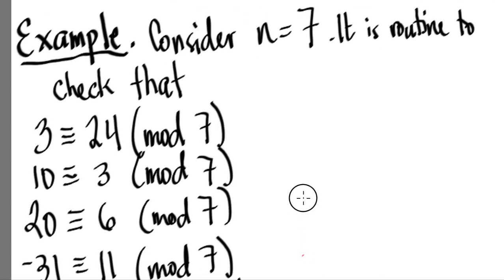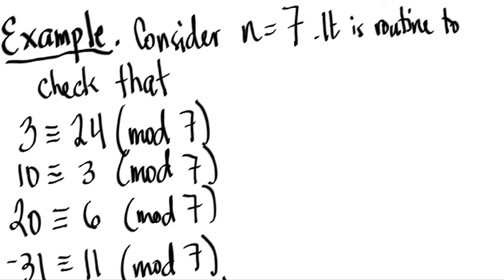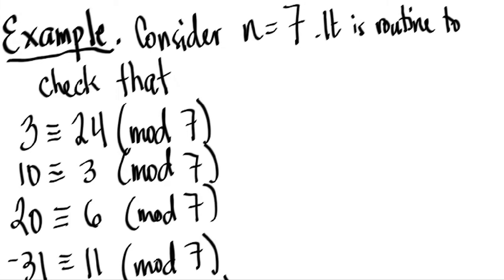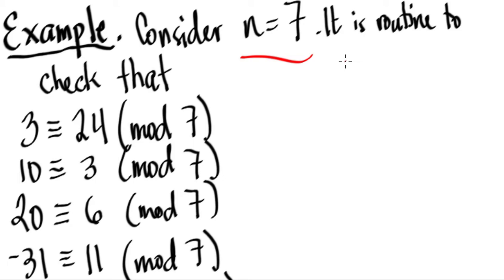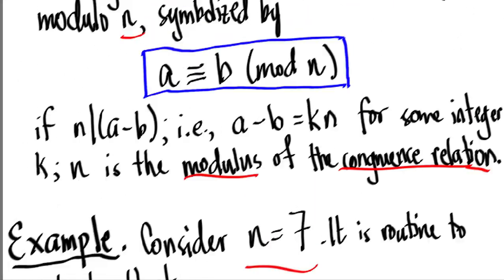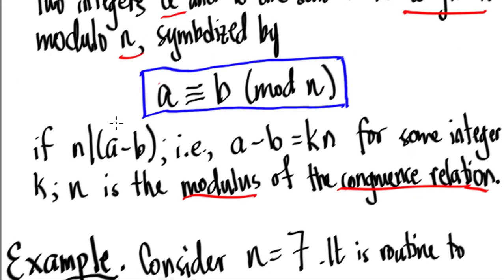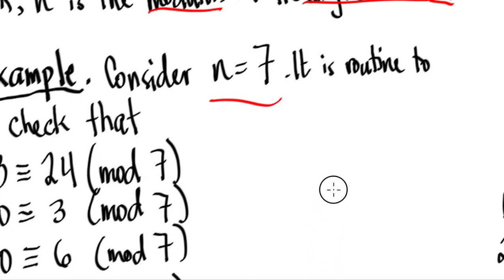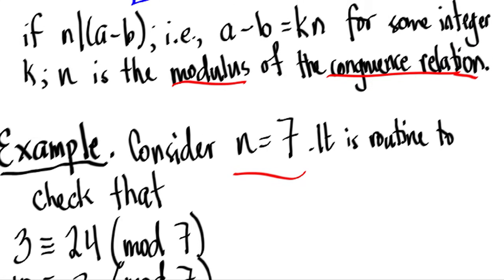Let's consider modulo n equal to 7. It is routine to check that 3 is congruent to 24 modulo 7. Why is that? Recall the definition: a is congruent to b modulo n if n divides a minus b. Let's apply that here.